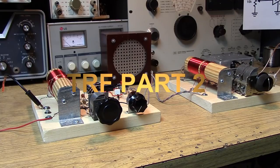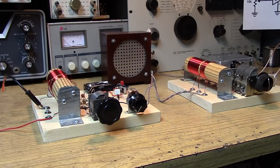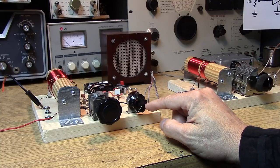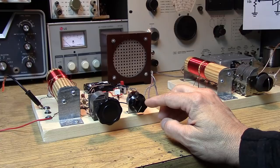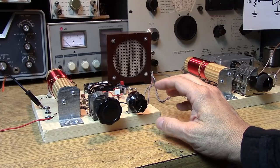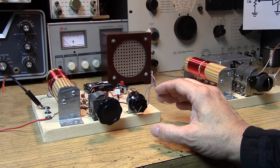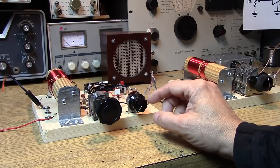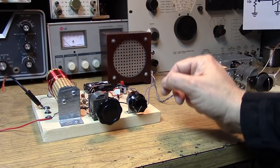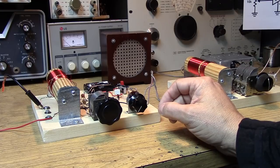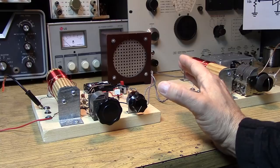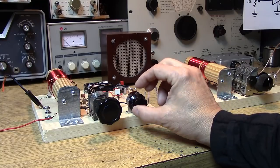A regenerative preselector is a lot like a regenerative receiver. You have a regeneration control which adjusts the amount of feedback and takes you very close to oscillation. You don't actually go into oscillation, but you want to get close so you can multiply the Q of the circuit and effectively amplify the station or exalt the station above the other signals that you want.